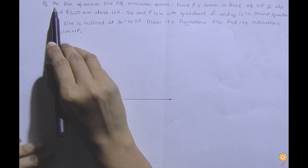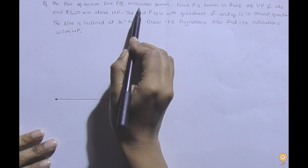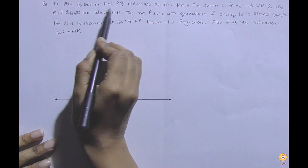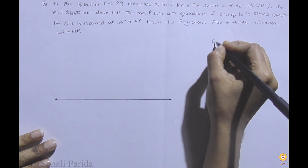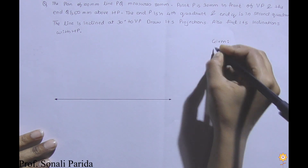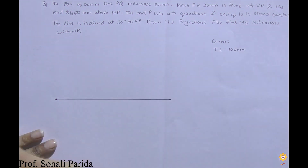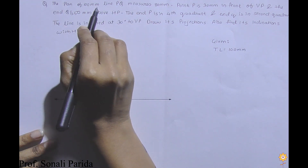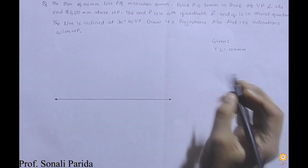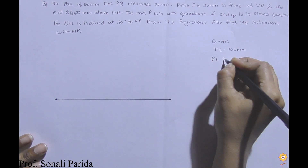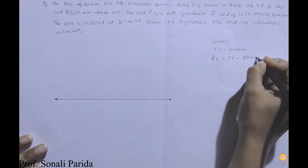The question reads: the plan of a 100 mm line PQ measures 80 mm. So the true length would be 100 mm. The plan of 100 mm line PQ measures 80 mm, meaning the plan — or top view — will measure 80 mm.